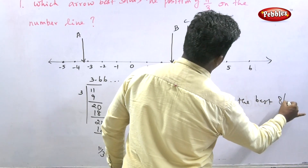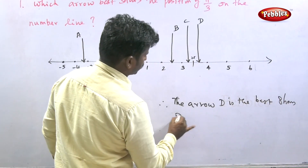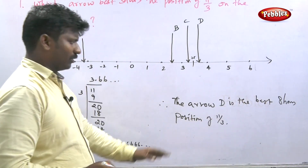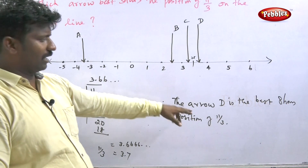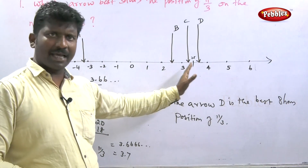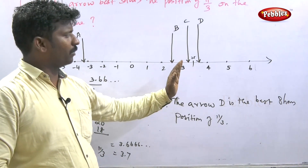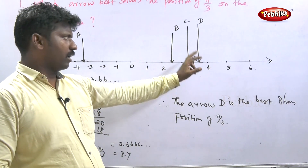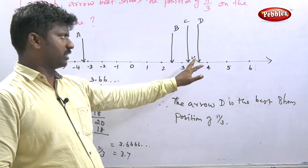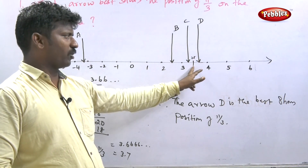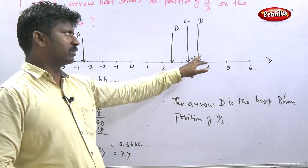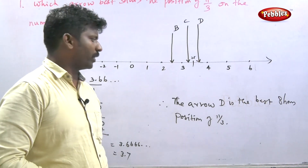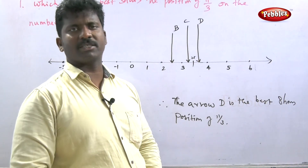Therefore, arrow D is the best to show the position of 11 by 3. The value 3.666... lies between 3 and 4, between 3.5 and 4, near 3.7 — so arrow D is correct.